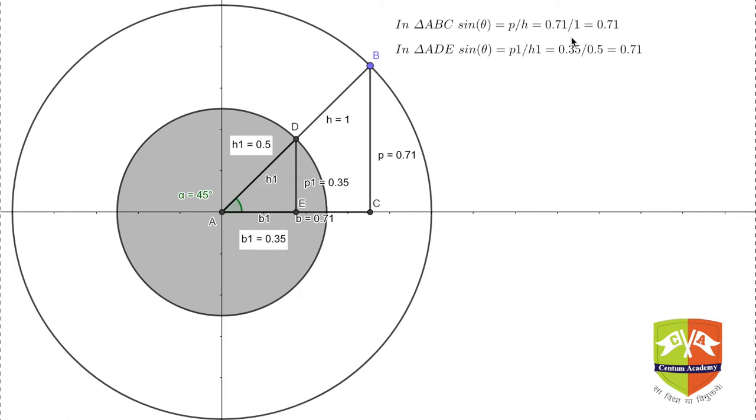You can see one of the cases is mentioned over here. In this case, theta is 45 degrees. At 45 degrees, P by H in the outer triangle is 0.71 upon 1, which is 0.71. And sine theta for the inner triangle also is P1 upon H1. Now P1 was 0.35 and H1 is 0.5. So if you see, both the sides are exactly half of the sides given in triangle ABC, so hence the ratio doesn't change.